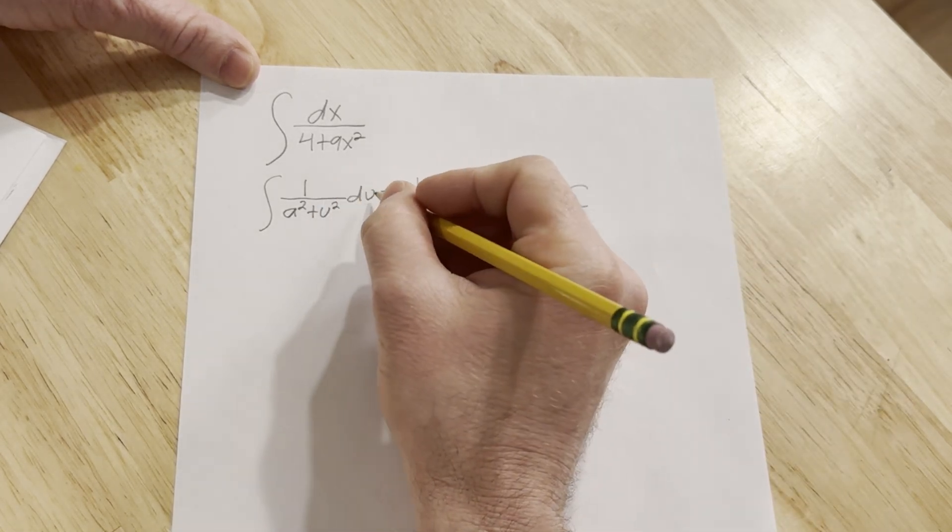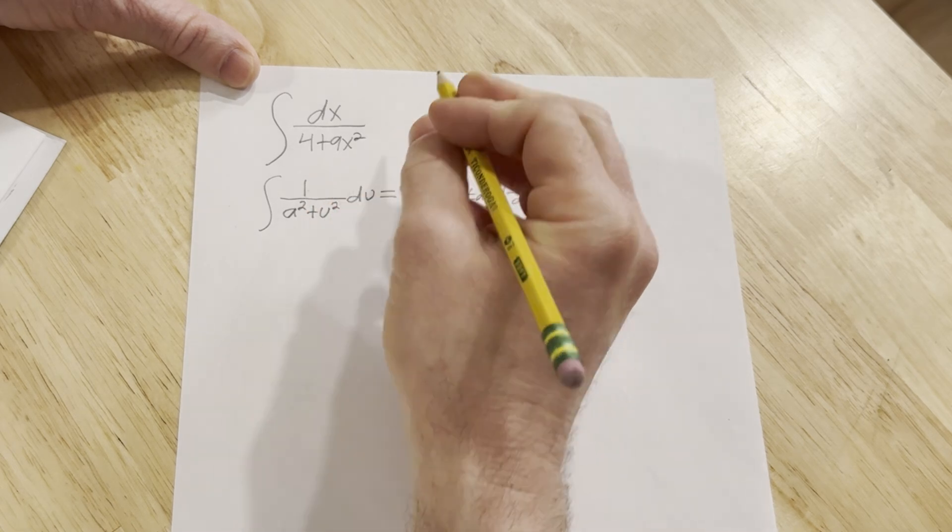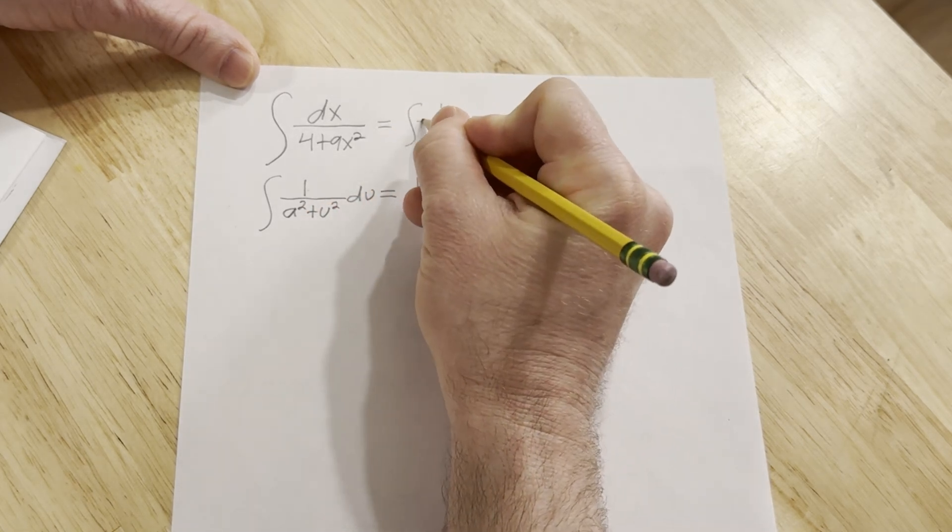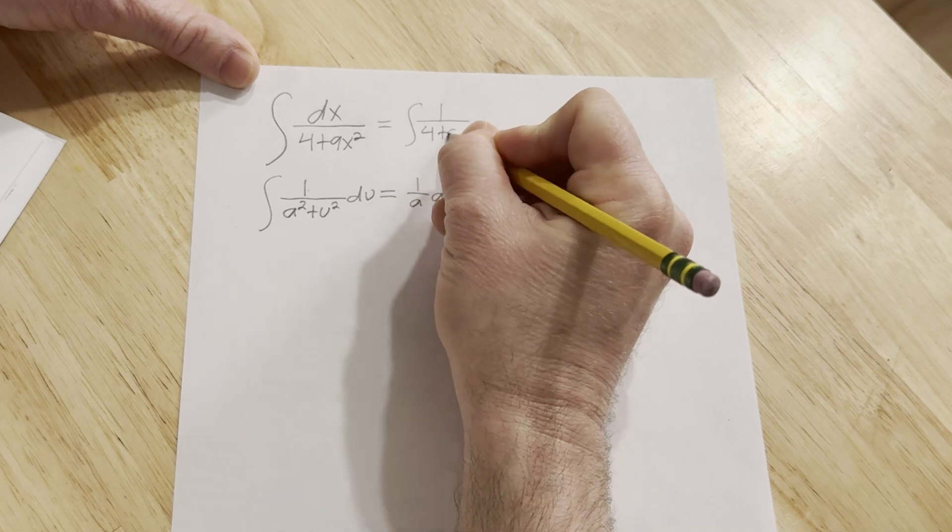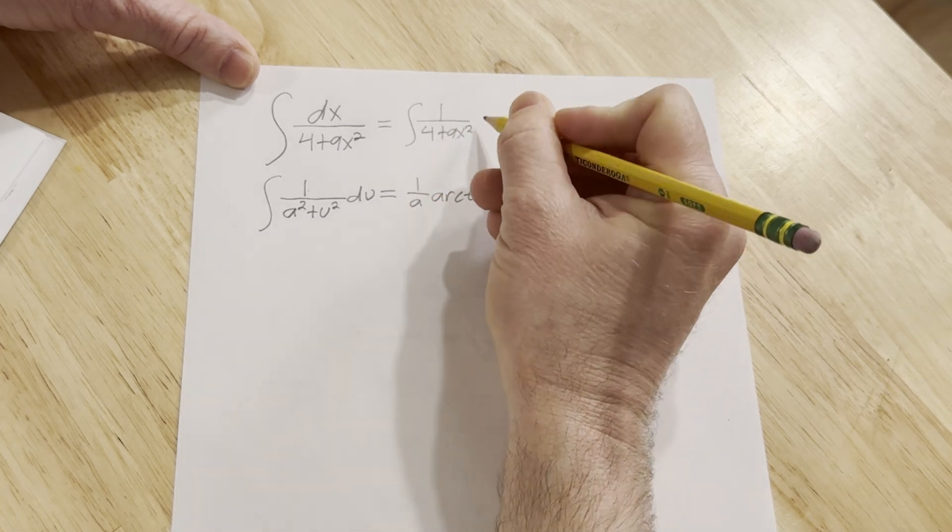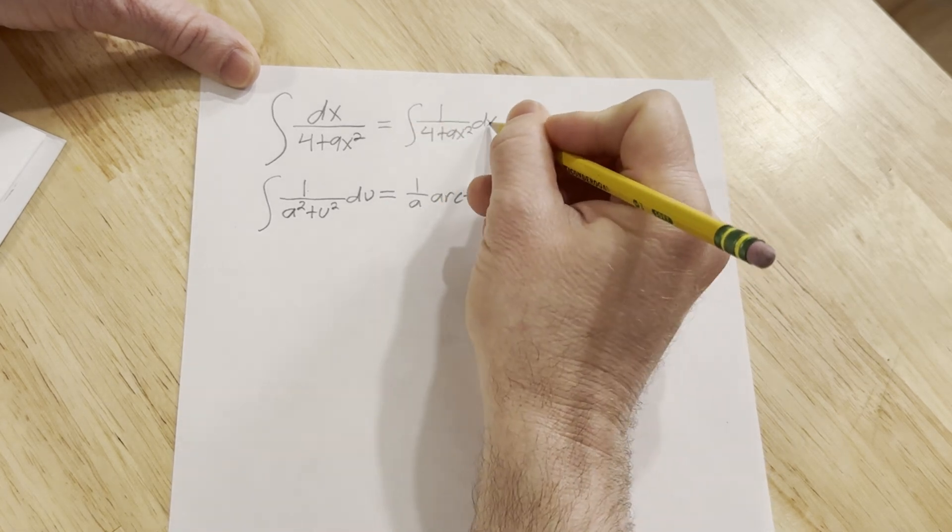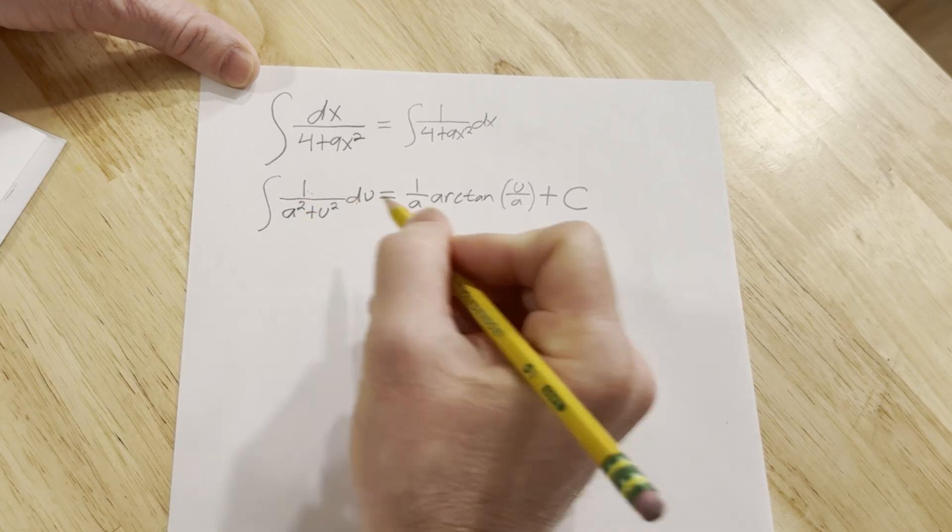So you might say, well the du is here, it's not up here, it doesn't matter. This can be written as the integral of 1 over 4 plus 9x squared dx. So it doesn't really matter where you put the dx, likewise I can put the du up here.